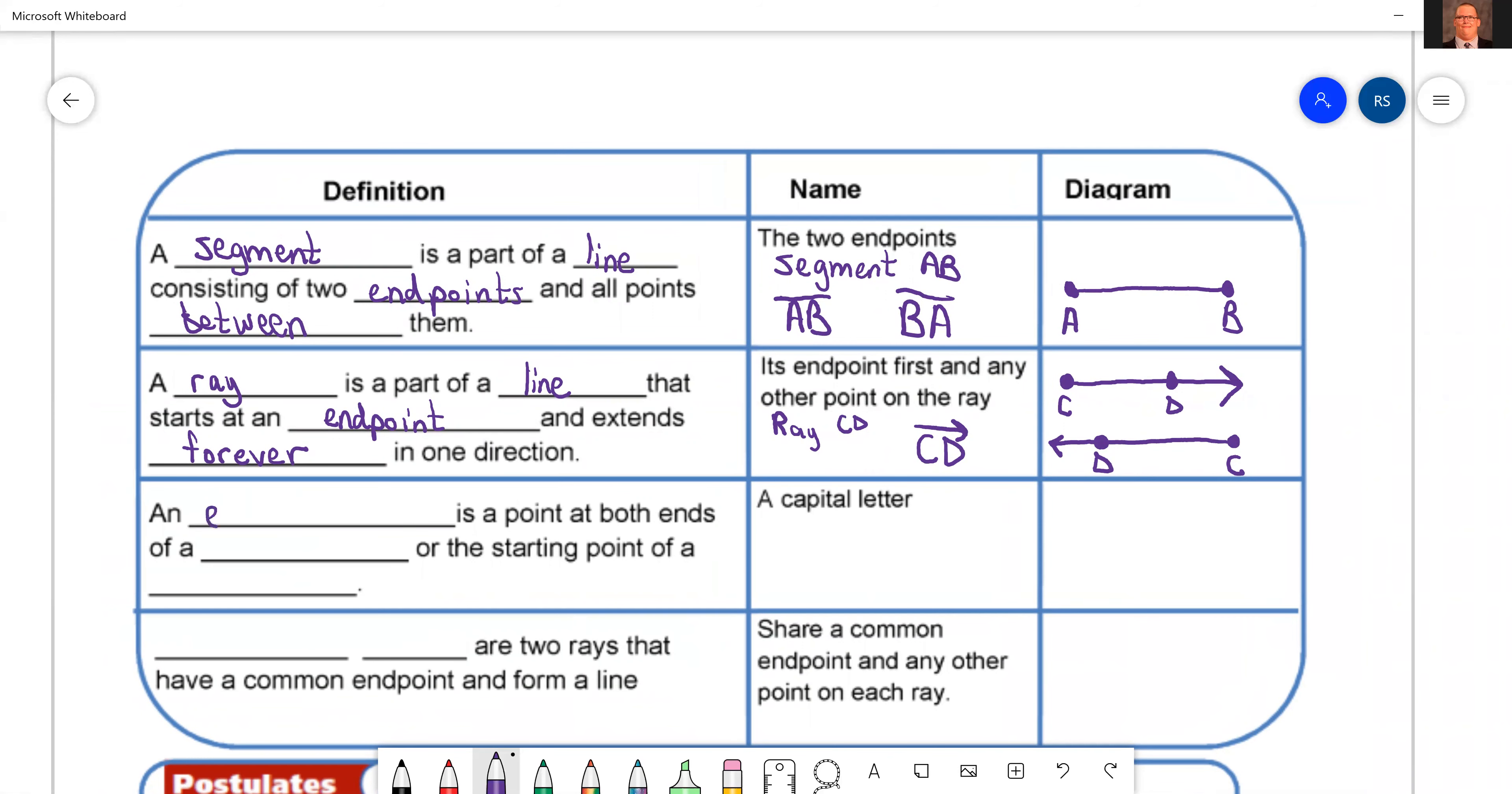So first one is where you start, and then the second letter is whatever you go through. So we start at C, and then we go through D. Now an endpoint